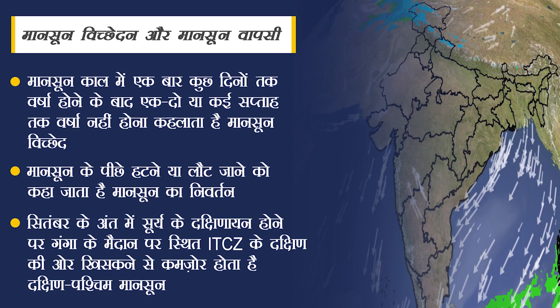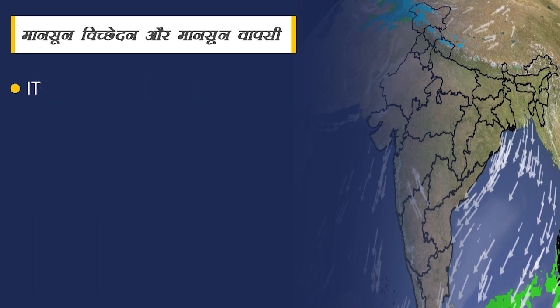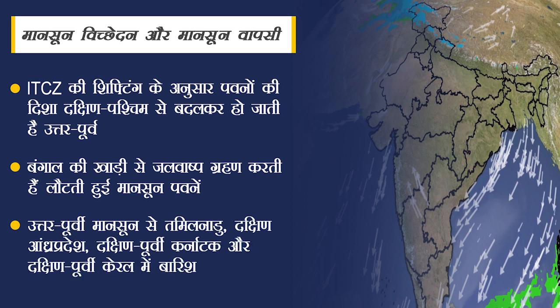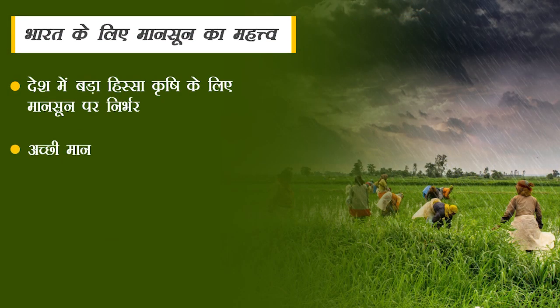मानसून के पीछे हटने या लौट जाने को मानसून का निवर्तन कहा जाता है। शीतऋतु में सितंबर के अंत में सूर्य के दक्षिणायन होने की स्थिति में गंगा के मैदान पर स्थित ITCZ भी दक्षिण की ओर खिसक जाता है। इससे दक्षिण-पश्चिम मानसून कमजोर पड़ने लगता है। सितंबर के पहले सप्ताह में मानसून राजस्थान, गुजरात और पश्चिमी गंगा मैदान से लौट जाता है। ITCZ की शिफ्टिंग के मुताबिक पवनों की दिशा दक्षिण-पश्चिम से बदलकर उत्तर-पूर्व हो जाती है - यही उत्तर-पूर्व मानसून होता है। लौटती मानसून पवनें बंगाल की खाड़ी से जलवाष्प ग्रहण करके तमिलनाडु, दक्षिण आंध्रप्रदेश, दक्षिण-पूर्वी कर्नाटक और दक्षिण-पूर्वी केरल में बारिश करती हैं।